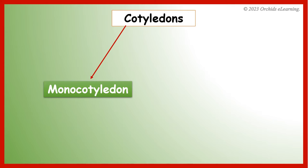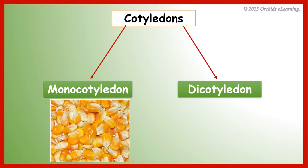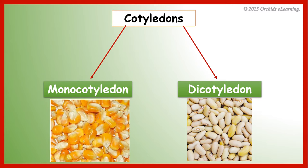There are two types of cotyledons: monocotyledon, also called monocots, and dicotyledon, also called dicots. Let us see the difference between them.